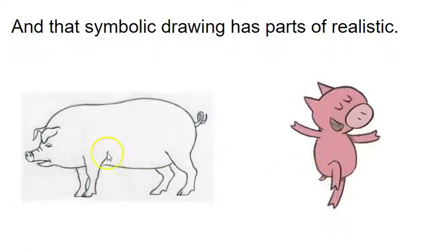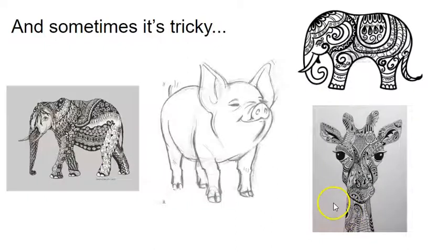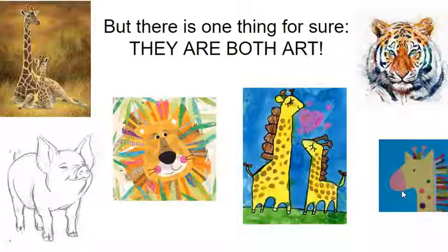That symbolic drawing has parts of realistic. For example, on this pig we still have triangle ears on both, we have the split toe on both, and we have the big snout on both. This one is made up from your imagination but it still has parts of realistic. Sometimes it's a little bit of both — realistic drawing with symbolic design. This one right here has a realistic drawing but a symbolic face because the pig is smiling.